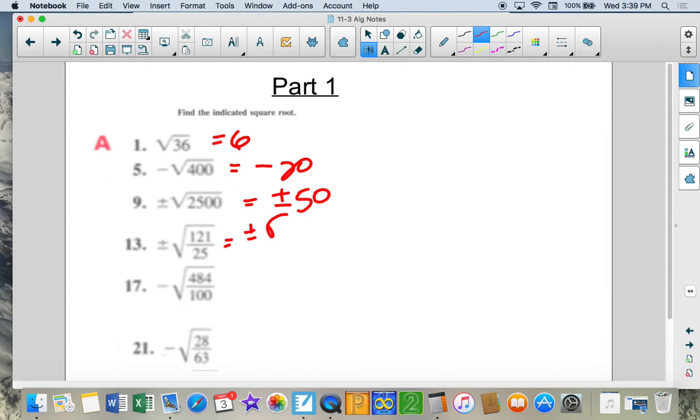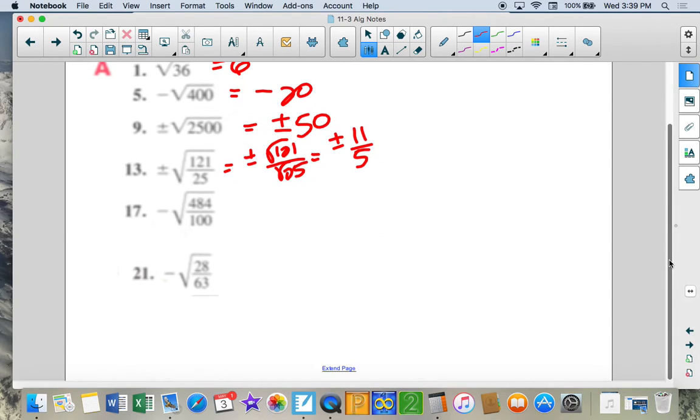Here we're going to get plus or minus, I'm going to separate these, and I'm going to get plus or minus 11 over 5. Square root of 121 is 11. This is going to be minus square root of 484, which I'm pretty sure is 22, over the square root of 100, which equals 10. And we would simplify that to 11 fifths.